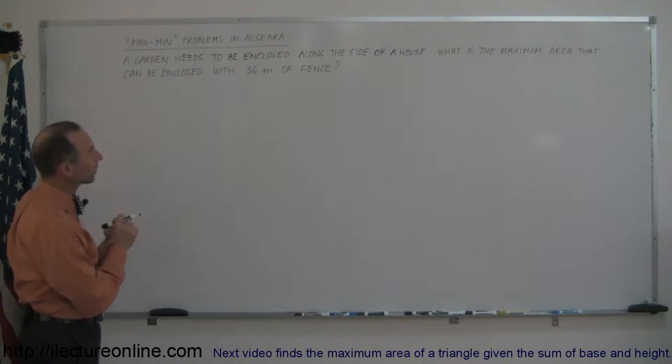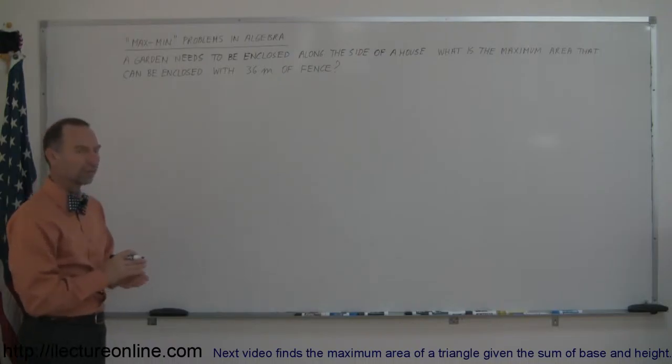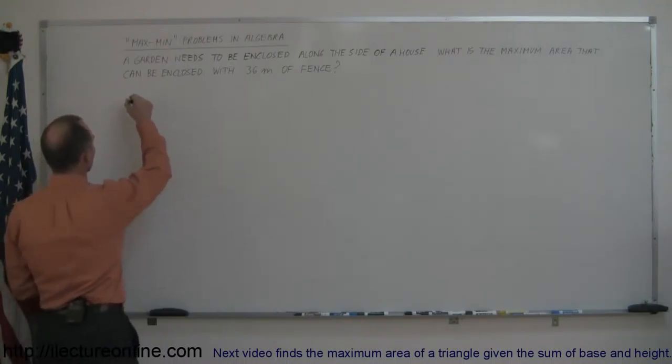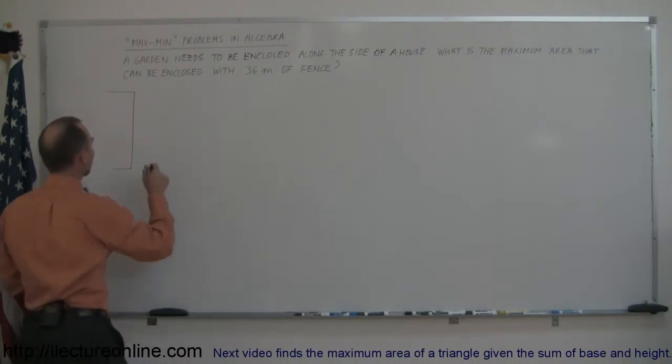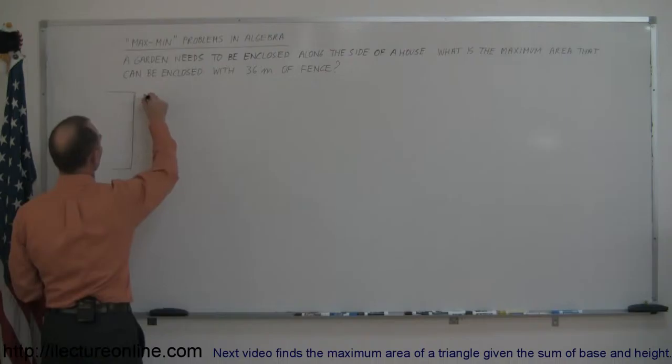Let's take a look here. We have a garden that needs to be enclosed along the side of a house. What is the maximum area that can be enclosed with 36 meters of fence? Let's make a little drawing. So let's say that this is the wall of the house. Here's the house, and this is kind of like a bird's eye view picture.